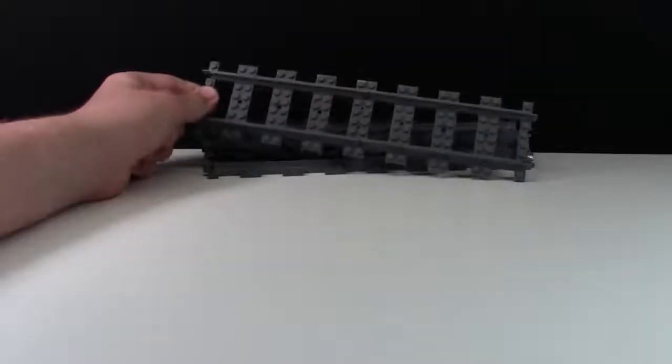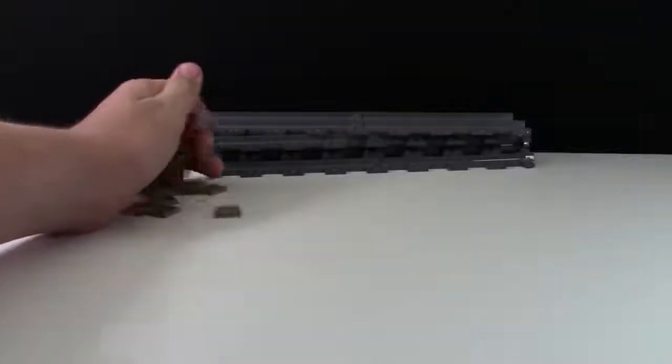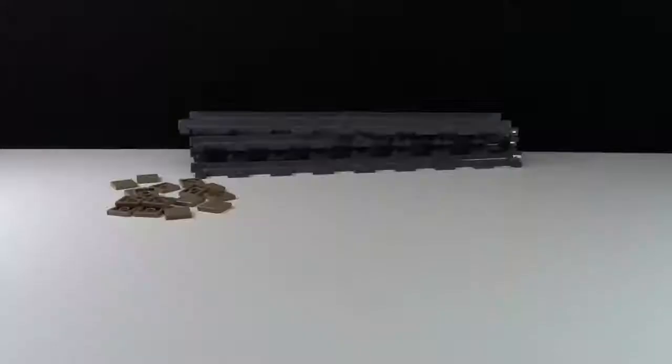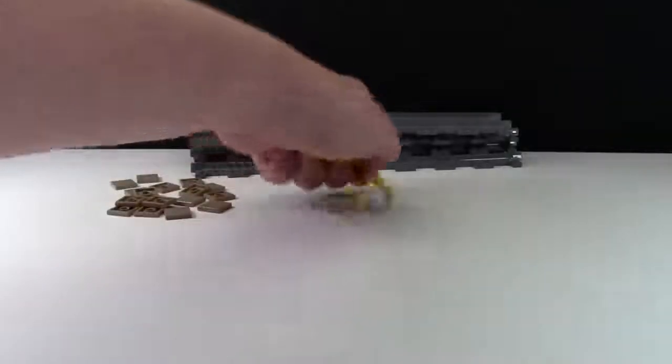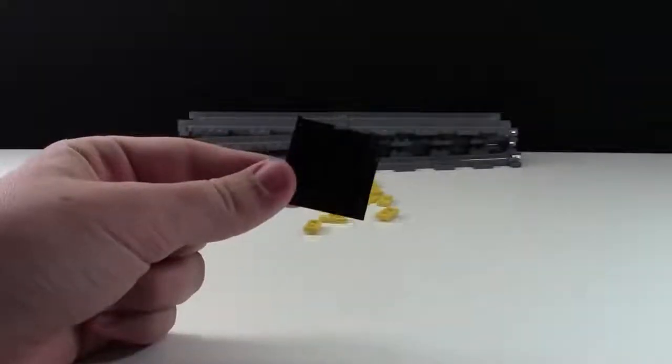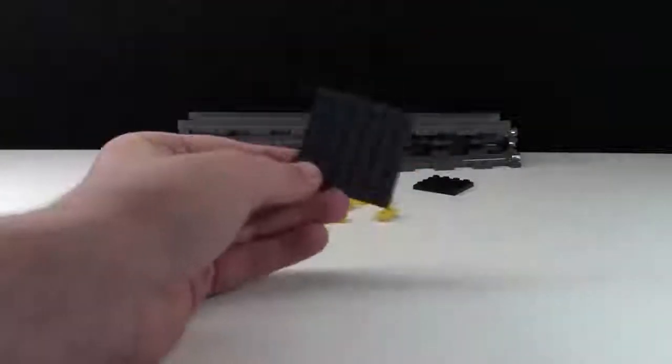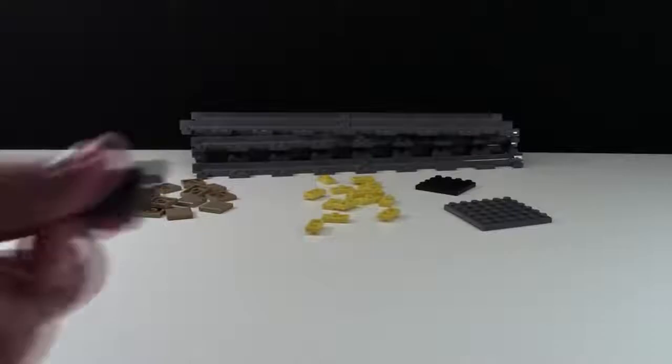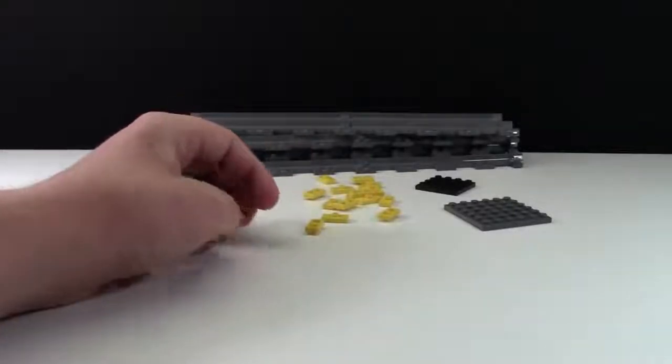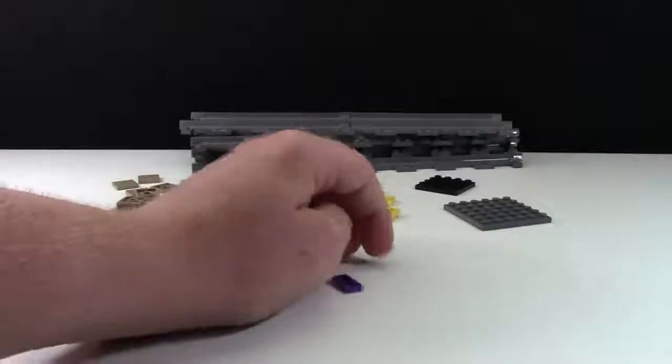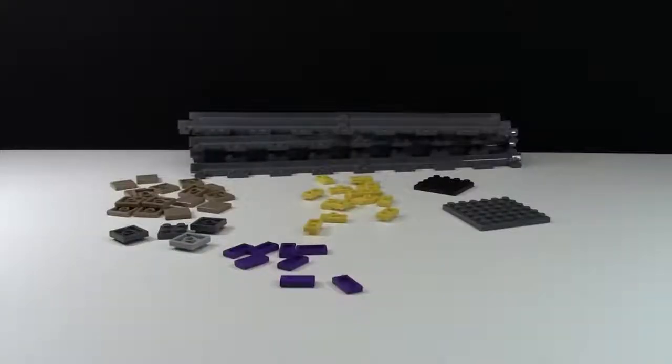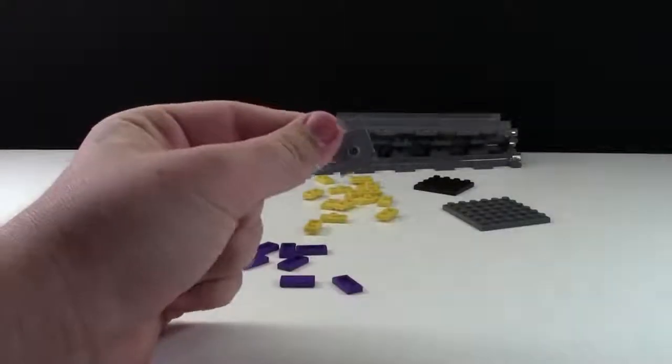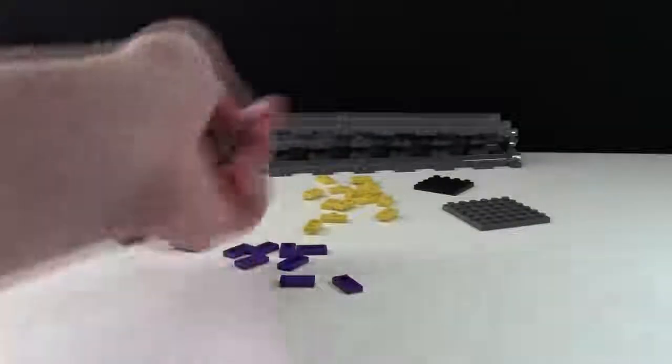In order to make this you'll need some LEGO train track, 16 2x4 tiles in any color, 16 1x2 jumper plates, a 4x4 plate, a 6x6 plate, 4 2x2 plates, 8 1x2 tiles, as well as 4 2x2 jumper plates with one stud in the center.